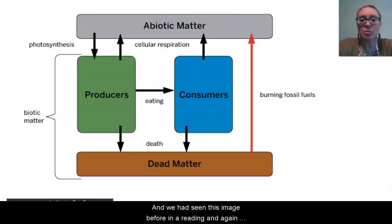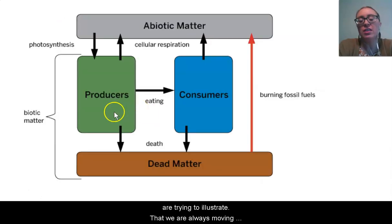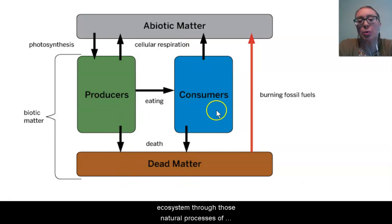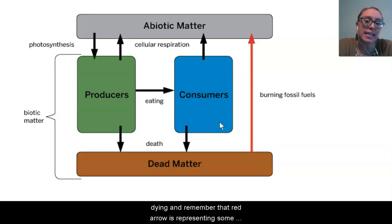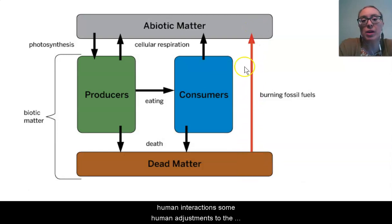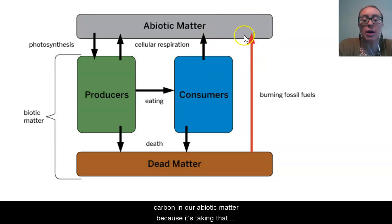We had seen this image before in a reading, and again that's reminding us of what these two key concepts are trying to illustrate — that we are always moving carbon among the components of the ecosystem through the natural processes of photosynthesis, cellular respiration, eating, and dying. The red arrow represents some human interaction, some human adjustments to the way the system works through our burning of fossil fuels. That action is increasing the amount of carbon in our abiotic matter because it's taking carbon that is stored in dead matter and releasing it into the atmosphere.